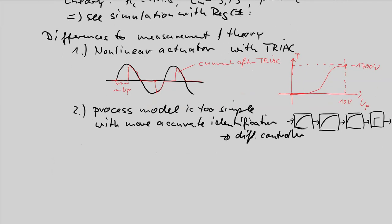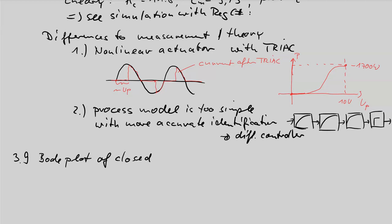To close chapter 3, there is a last small chapter 3.9. The theme of this has nothing to do with temperature control and flash design. It has something to do with Bode plots. I want to show you a way to draw the Bode plot of a closed loop if the Bode plot of the open loop is given.